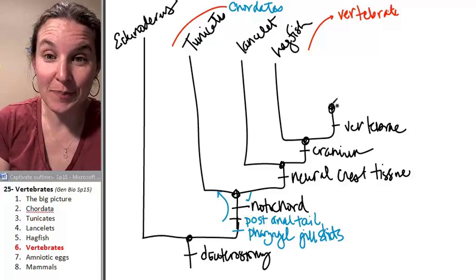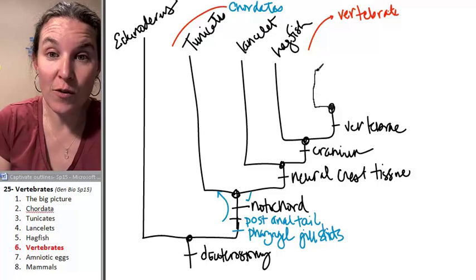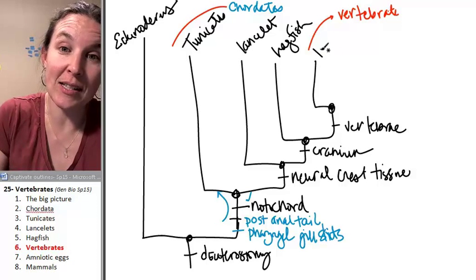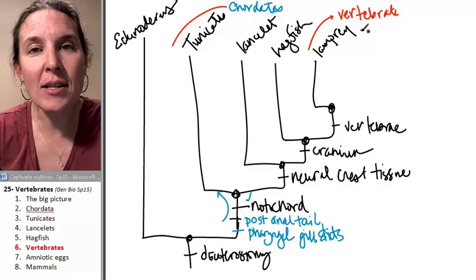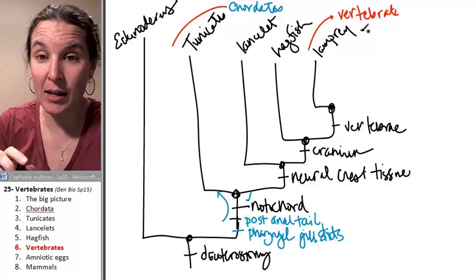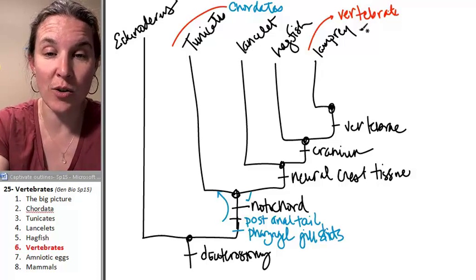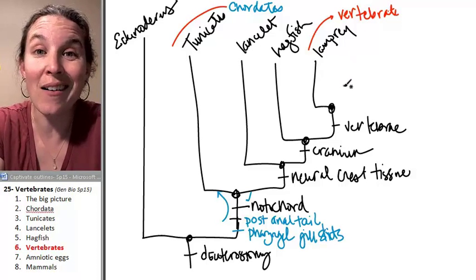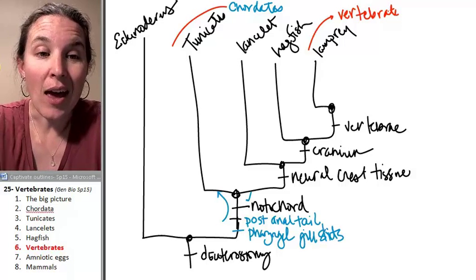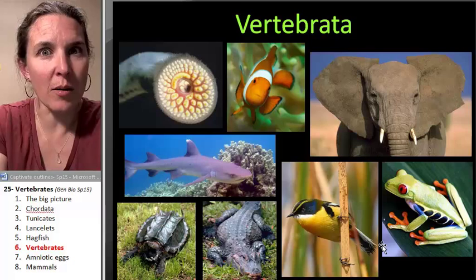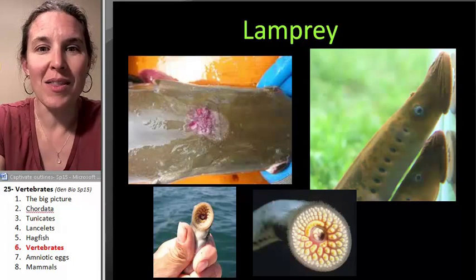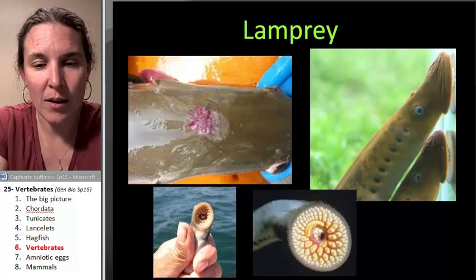Our first vertebrate, the first critter that has the vertebrate is the lamprey. And lampreys, we're going to look at them in a little more detail. I want to show you because lampreys do not have jaws. And so what is this lamprey that you speak of? Well, vertebrates are incredibly diverse, but this is a lamprey.